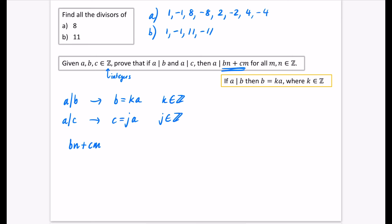So now what I'm going to do is I'm going to investigate the bn + cm. So bn + cm that we've got here, but we've just said that b is equal to ka. So b equals ka, and that's kan. And cm is going to be jam like this.